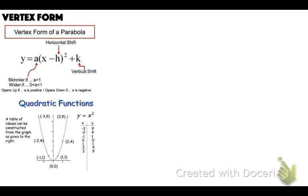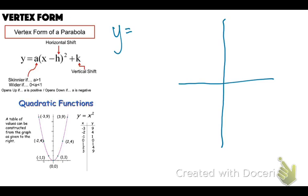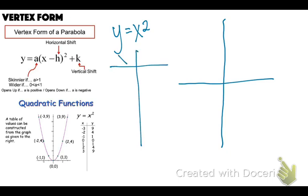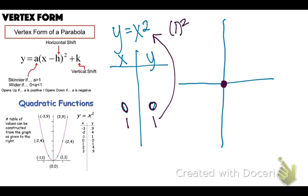This table is telling us how to graph parabolas. If we have the function y equals x squared, we could graph this by plugging numbers in. Starting with x equals 0: y is 0 squared, which is 0, so we have a point at (0, 0). If we plug in 1, 1 squared is 1. If we plug in negative 1, negative 1 squared is also 1. So we go left 1 up 1, and right 1 up 1.